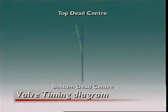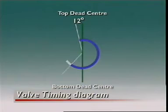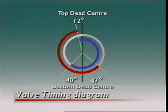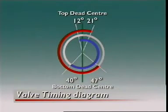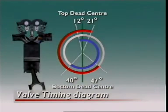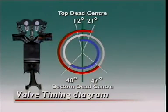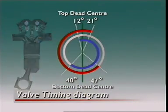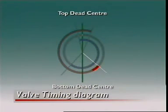This intake valve opens 12 degrees before the piston reaches top dead center and closes 40 degrees after bottom dead center. The exhaust valve opens 47 degrees before bottom dead center and stays open until 21 degrees past top dead center. This gives exhaust gases more time to leave. By the time the piston is at 47 degrees before bottom dead center on the power stroke, combustion pressures have dropped considerably and little power is lost by letting the exhaust gases have more time to exit.